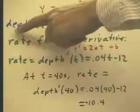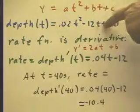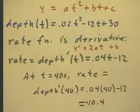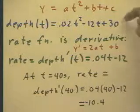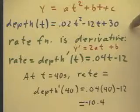We begin with the quiz problem. We have a depth function: depth of t equals .02t squared minus 12t plus 30. We might assume this is in centimeters and that clock time is measured in seconds, but it's not necessary at this point.